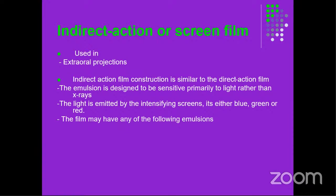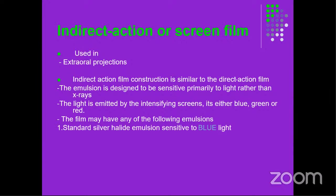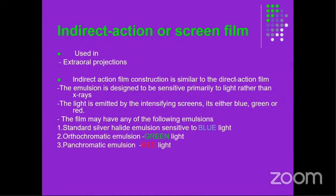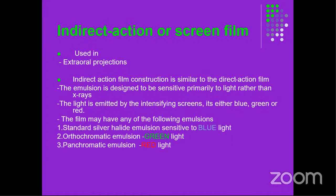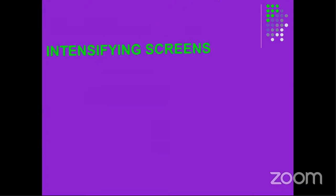The films for indirect action or screen film may have various types of emulsions. One is standard silver halide emulsion sensitive to blue light, then orthochromatic emulsion sensitive to green light, and panchromatic emulsion sensitive to red light. They all produce the same image; it depends on the one chosen or used in your institution. The light is produced when the intensifying screens are exposed to X-rays — they emit light which is projected onto the film to help form the image.